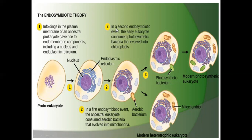In the third step, in a second endosymbiotic event, the early eukaryote consumed photosynthetic bacteria that evolved into the chloroplast. So the chloroplast and mitochondria were developed inside the pro-eukaryote cell. Modern heterotrophic eukaryotes contain mitochondria, and the modern photosynthetic eukaryote has both the chloroplast and the mitochondria.